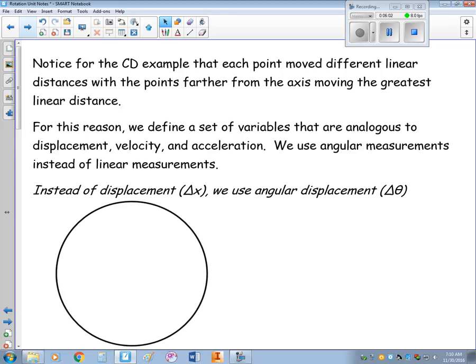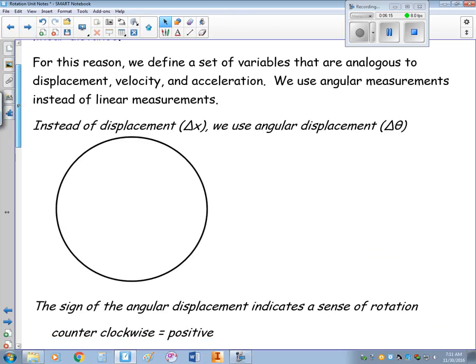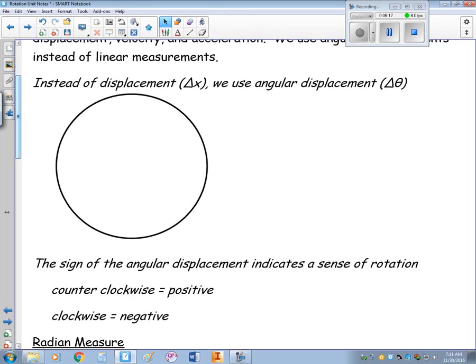For this reason and others, we define a set of variables that are analogous to displacement, velocity and acceleration. We then use angular measurements instead of linear measurements. So, instead of having a delta x for displacement, we have a delta theta for angular displacement.